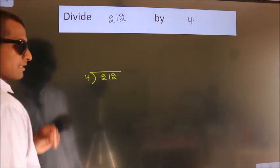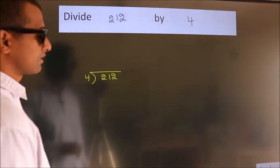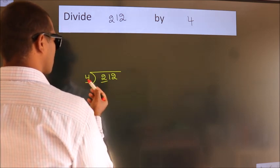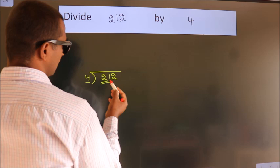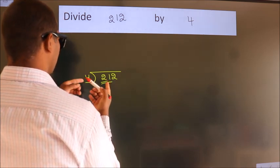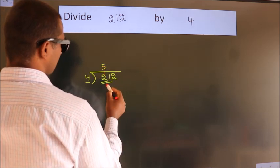This is your step 1. Next, here we have 2. Here 4. 2 smaller than 4. So we should take 2 numbers. 21. A number close to 21 in 4 table is 4 fives, 20.